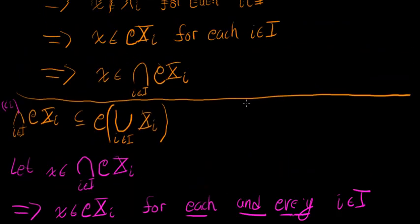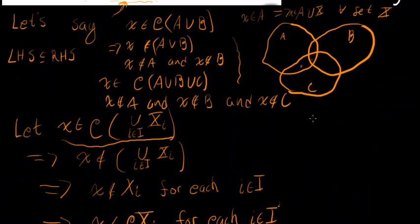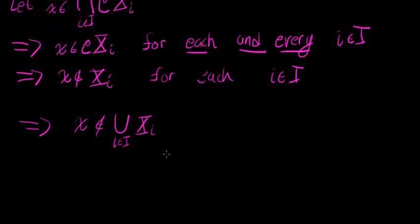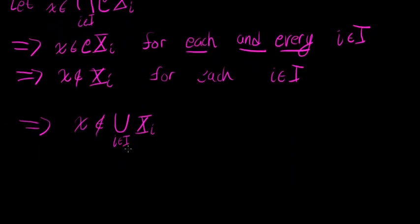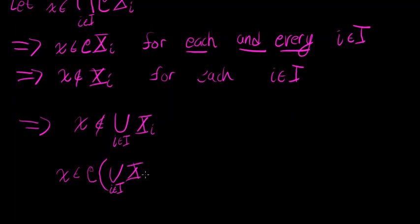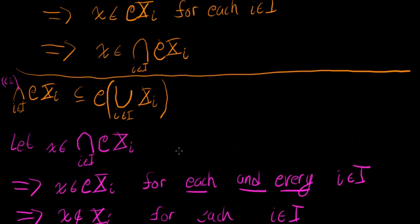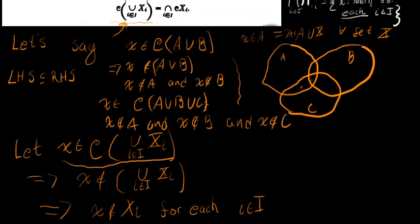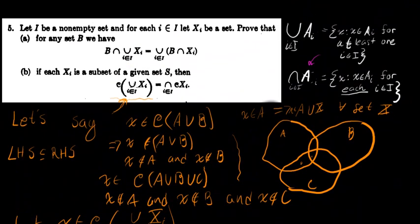And if x is not in the union of Xᵢ for each i in I, then by the definition of set complement, x is in the complement of the union of this family of sets Xᵢ. We're done — we've just shown that the right-hand side set is a subset of the left-hand side set, completing the proof.